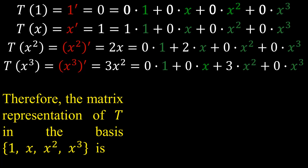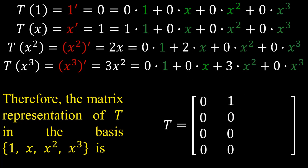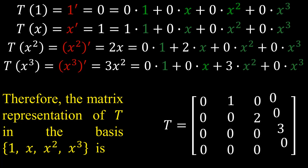Therefore, the matrix representation of T in the basis {1, x, x², x³} is obtained by writing the coefficients in column form. The first column is [0, 0, 0, 0], the second column is [1, 0, 0, 0], the third column is [0, 2, 0, 0], and the fourth column is [0, 0, 3, 0]. Hence Option 3 is correct.